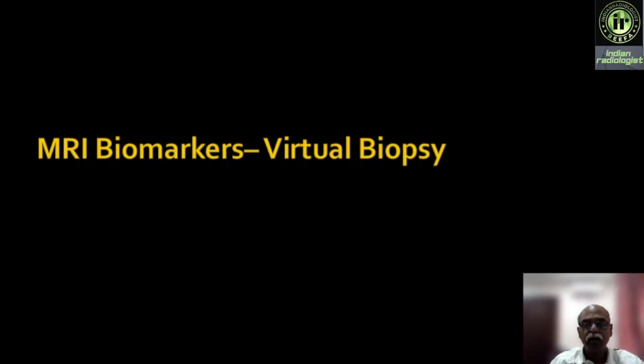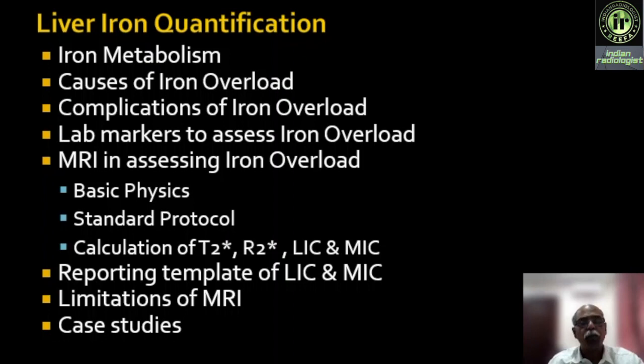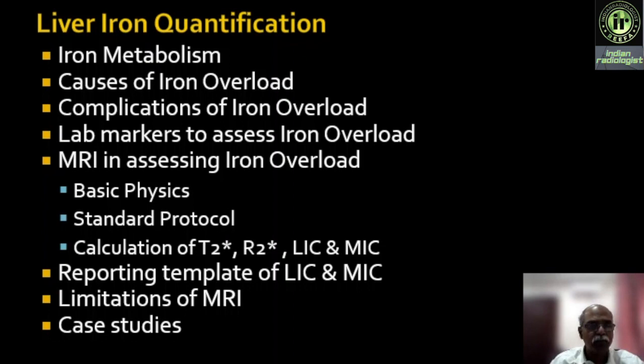I will be approaching the topic of liver iron quantification in the following manner. We will discuss iron metabolism, the causes of iron overload, how to differentiate between primary and secondary iron overload status, complications of hepatic iron overload, and what are the lab markers. When a patient comes to us, the hematologists will try to assess lab parameters, so we will look at what is the role of lab parameters and where they stand today compared to MRI.